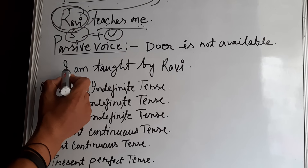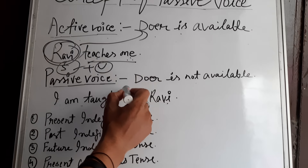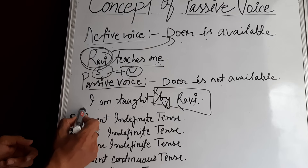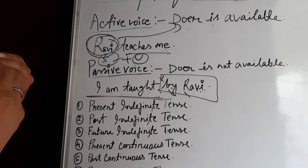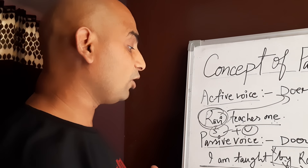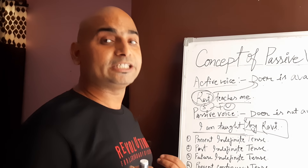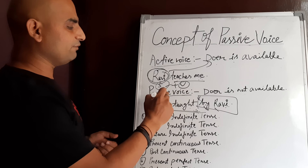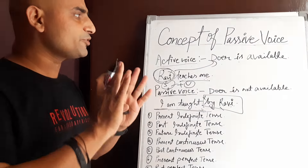For example, 'I am taught by Ravi' — this is the interchanging of active voice and passive voice. If we separate 'by Ravi,' then we focus on 'I am taught.' 'I am taught' means I did not teach anybody — there is somebody who teaches me, but that person is not available in the sentence. So the doer is not available in the passive voice, whereas in the active voice the doer is available.